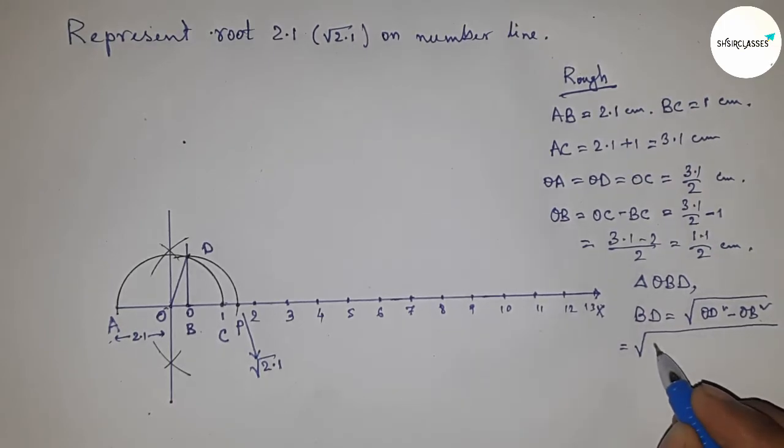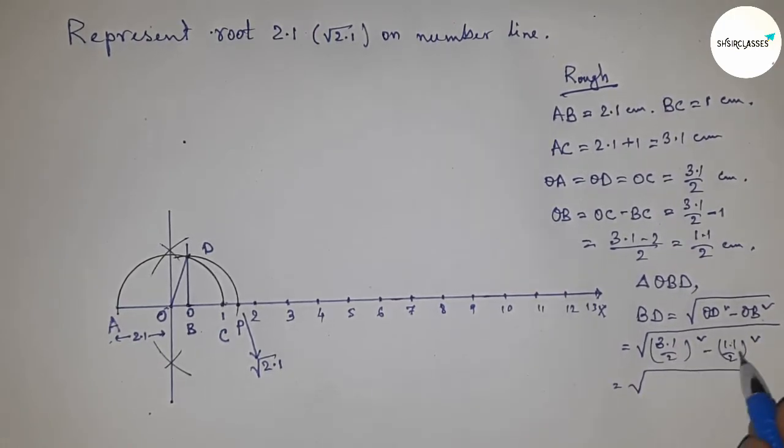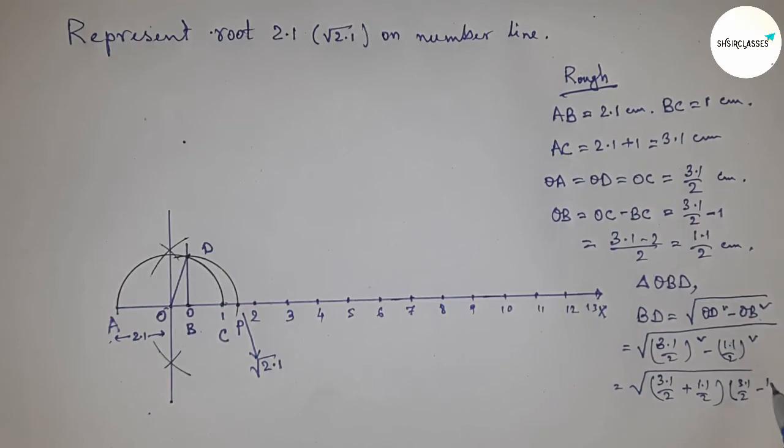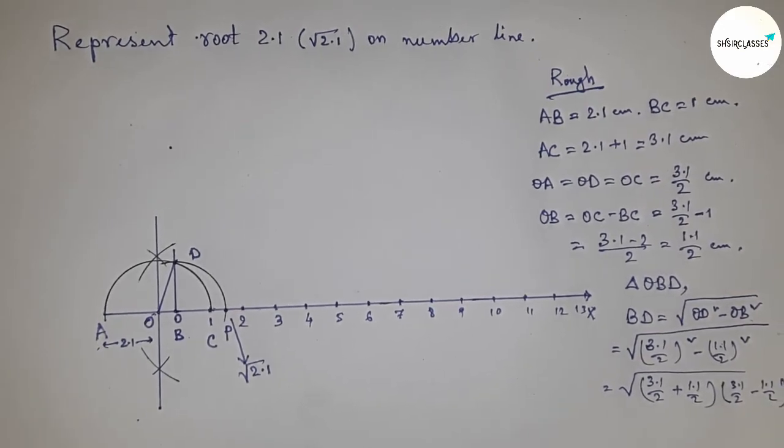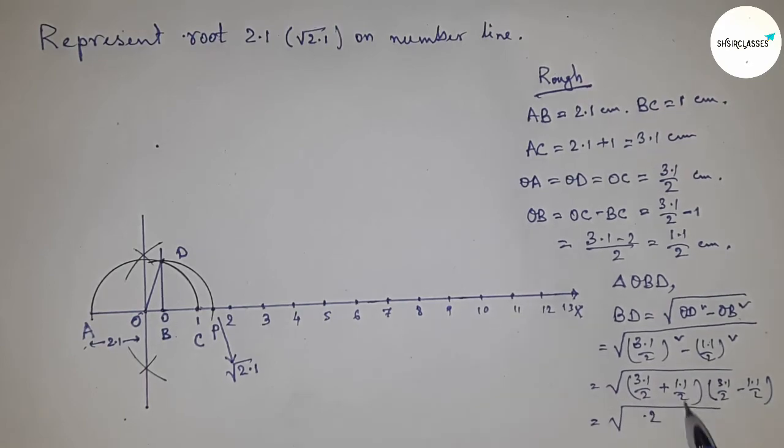Using the formula a² minus b² equals (a + b)(a - b), we apply the formula. Now calculating this, we get 4.2 by 2, which equals 1. Dividing 4.2 by 2 gives us 2.1 centimeters.